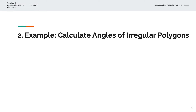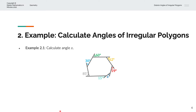In the first example, we are asked to calculate the angle x, and we are given a polygon with 7 sides — 1, 2, 3, 4, 5, 6, 7 — and we are asked to calculate that angle x. The sum of the exterior angles is always 360 degrees, regardless of how many sides the polygon has.